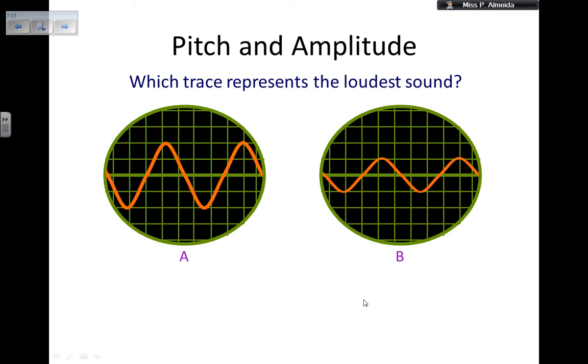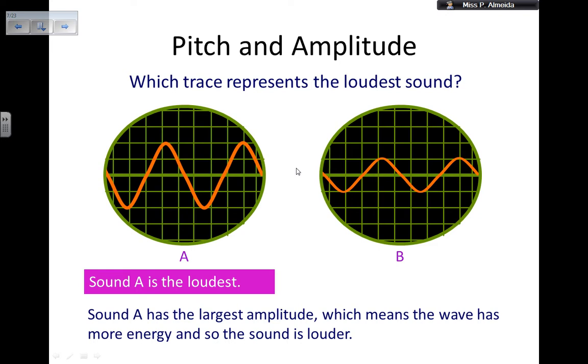Now, sounds can be described by their pitch and amplitudes. Pitch has to do with the frequency of the sound. Amplitude has to do with the loudness of the sound. Amplitude is going to be seen about the height of the wave. This wave is taller than this wave, so this wave has a higher amplitude. Wave A has a higher amplitude than signal B. Pitch has to do with the frequency of the signal, how many waves I can see passing through me every second. The frequency seems to be the same in these two diagrams. Which trace represents the loudest sound? Well, loudness has to do with amplitude. Amplitude has to do with the height of the wave. Trace A shows a larger amplitude, therefore it is going to represent the loudest sound. Sound A has the greatest amplitude, which means the wave has more energy, and so the sound is louder.